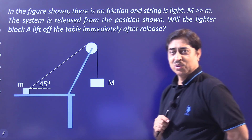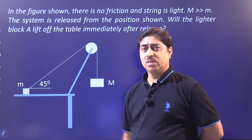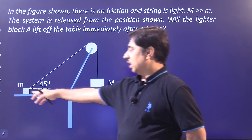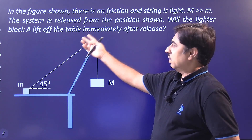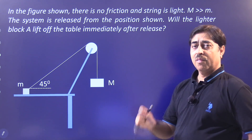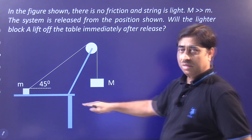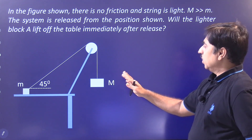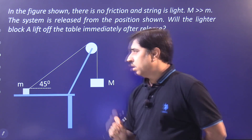Here is our first question. This is a system comprising of two blocks connected through a light string. This string is passing over the pulley. One of the blocks has been placed on the table and the other one is suspended. The statement says there is no friction, the string is light. The mass of block capital M is much much larger than mass of block small m. This system is released from the position shown in the figure, where the string is making an angle of 45 degrees with the horizontal.